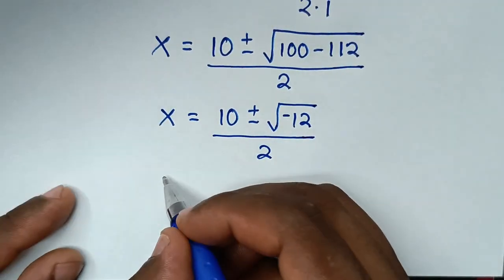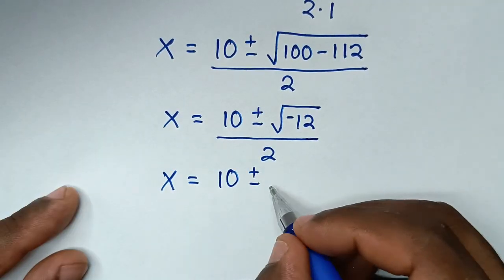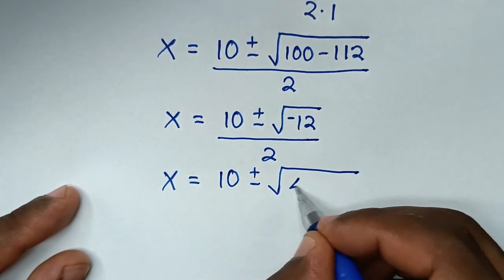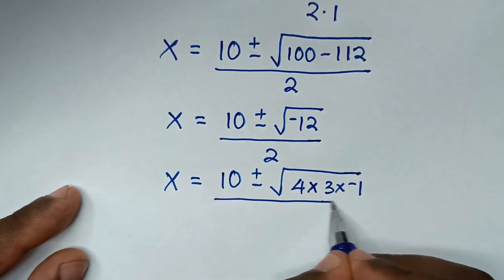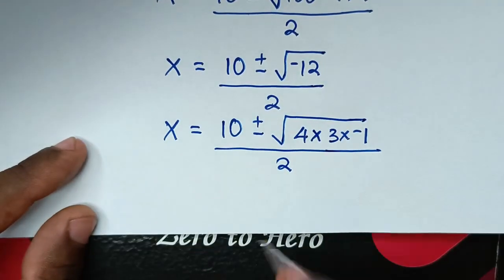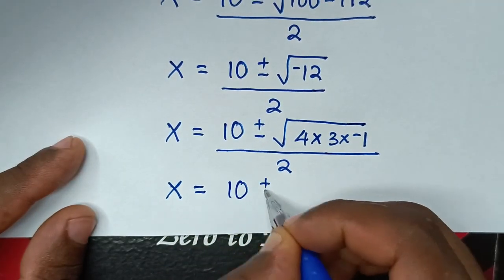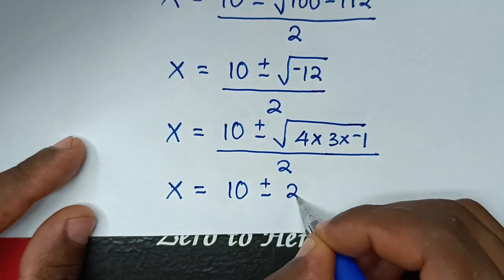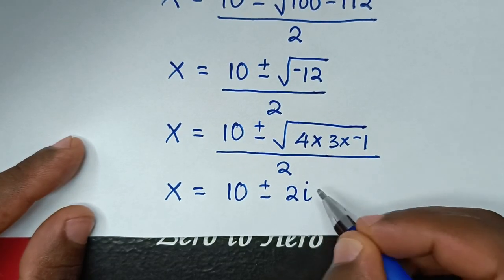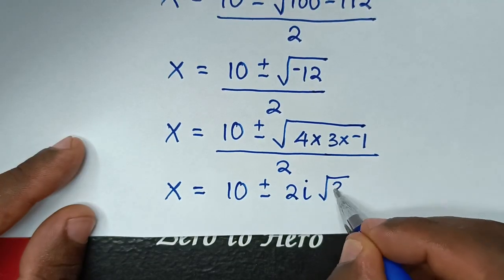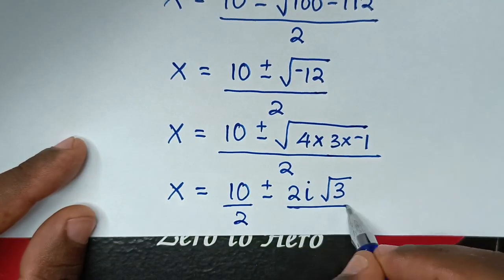We simplify √(-12) as √(4 × 3 × (-1)) = √4 × √3 × √(-1) = 2i√3. So x = (10 ± 2i√3) / 2. We then divide both terms in the numerator by 2.